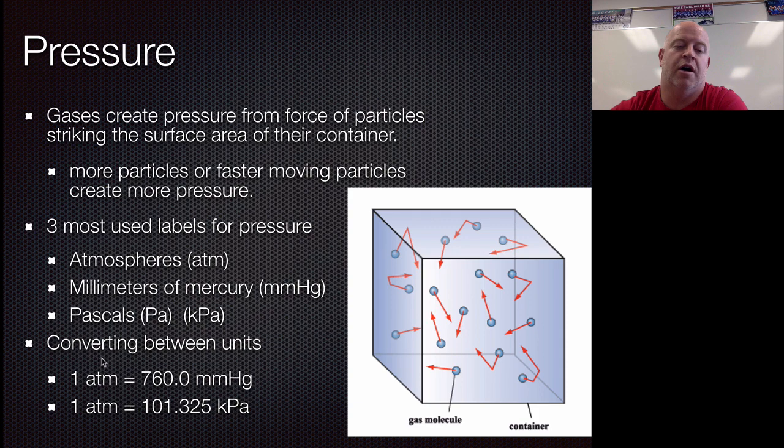The conversions aren't hard. We're going to set them both equal to one atmosphere of pressure. So these are things you're going to have to be able to do. And if you're working in millimeters of mercury to convert to atmospheres, it's a 1 to 760.0 ratio. And to go from kilopascals to atmospheres, it's 101.325.